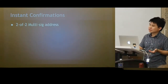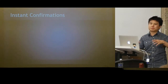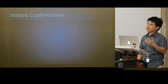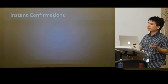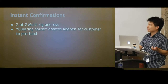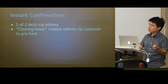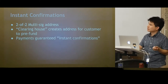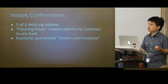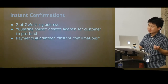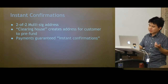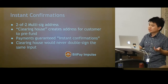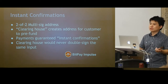One more use case is instant confirmations. Some merchants, when accepting Bitcoin for small amounts, shouldn't need to worry about double spending. One approach uses a clearing house that creates a 2-of-2 multisig address for the customer, which the customer pre-funds. Once the customer's funding transaction is confirmed, any subsequent payments from the wallet can be guaranteed instant confirmation, because the clearing house would never double spend the same input. As long as the merchant trusts this clearing house, it will never be double spent.